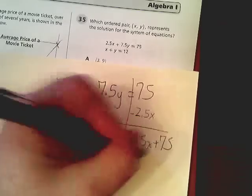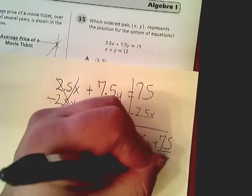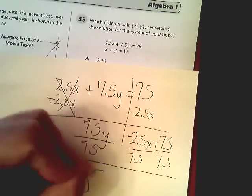Now I need to get rid of times 7.5, so I'm just going to divide. This becomes y.